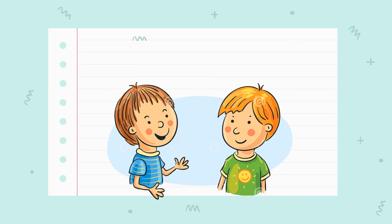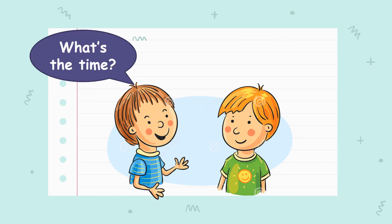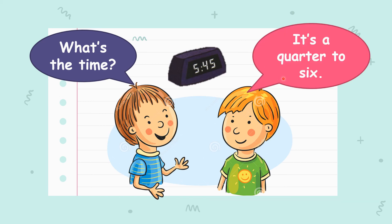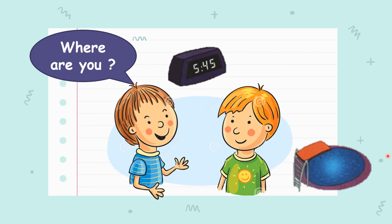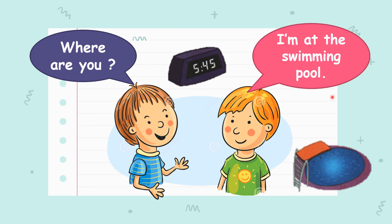Now let's try another set of dialogue. What's the time? If you look at this, it is 45. 45 is equal to 15 minutes more to the next hour. So you should say: it is a quarter to 6. Where are you? What do you think is this place? Yes, a swimming pool. I am at the swimming pool.